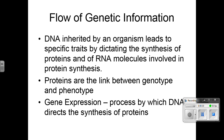This talks about the flow of genetic information. We start with DNA — that's the sequences of A, T, G, and C that make us all who we are. These are inherited by an organism and lead to our specific traits. It does that by dictating or controlling the process of making proteins.